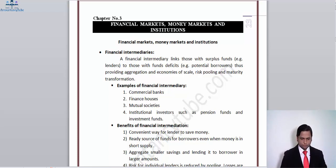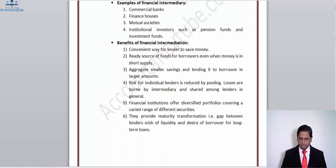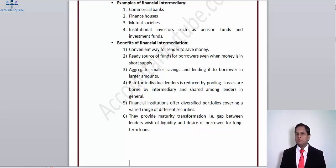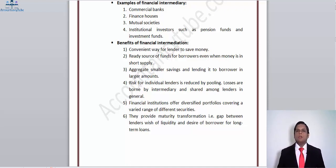Now we have the benefits of financial intermediation. Firstly, it offers a convenient way for lenders to save money. Then we have a ready source of funds for borrowers even when money is in short supply — the bank will always have a large reserve to support loans to businesses when needed. Thirdly, they aggregate small savings and lend to borrowers in larger amounts.